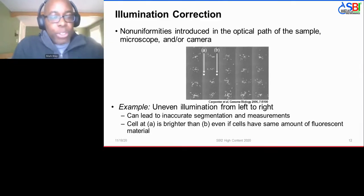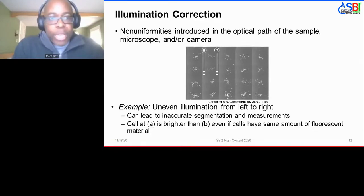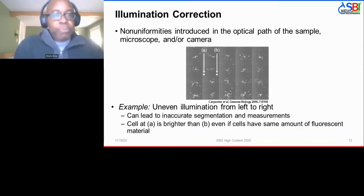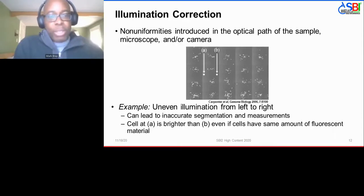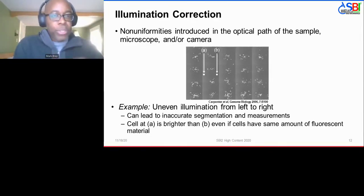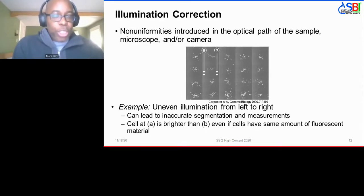In order to detect the foreground, there is usually some illumination correction that needs to be done. By virtue of using a microscope, the optics will introduce non-uniformities into your image regardless of the biological sample. For example, in a set of tiled images, the left side of each tile may be slightly brighter than the right side. If you're trying to identify the biological sample by thresholding, this gradient could bias your results. By correcting for illumination, you can even out this gradient so that a single threshold might actually work.